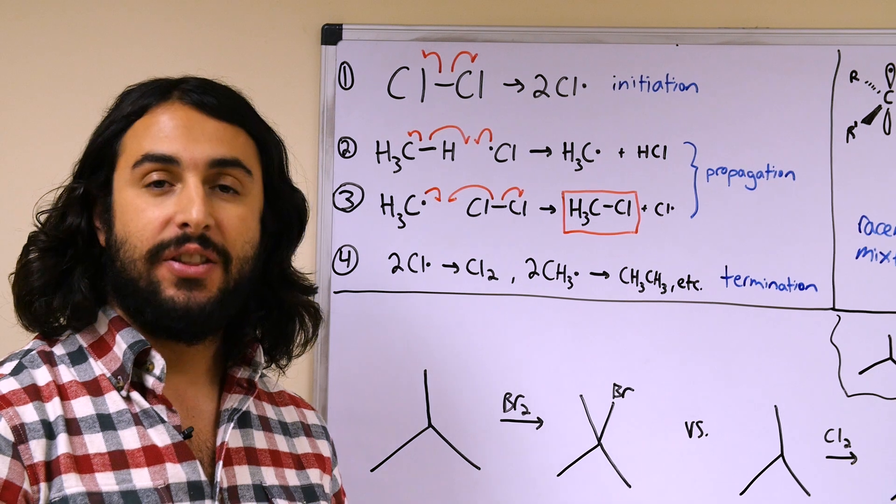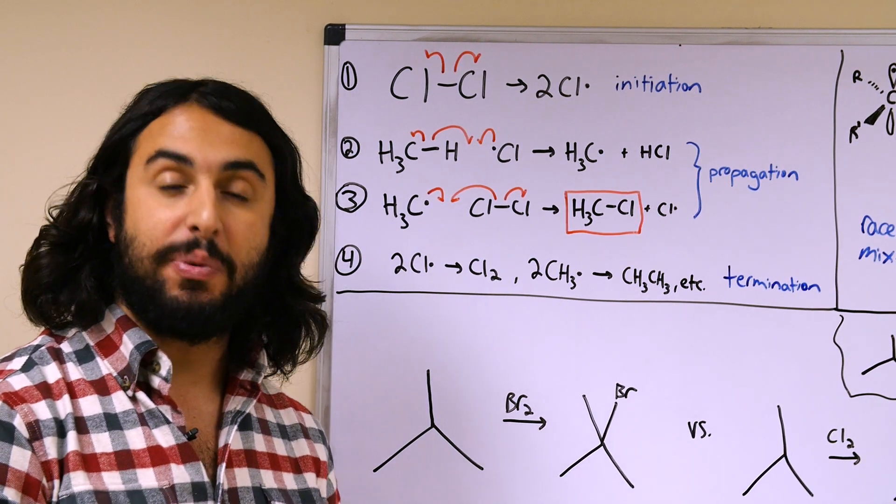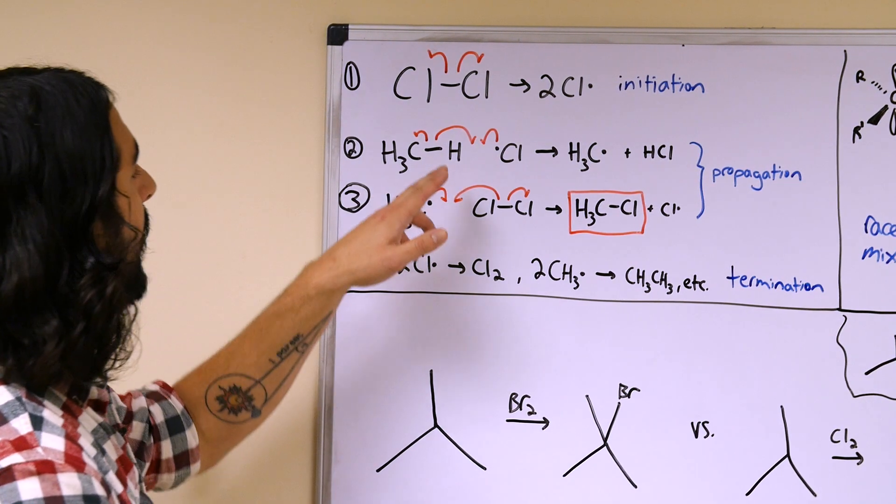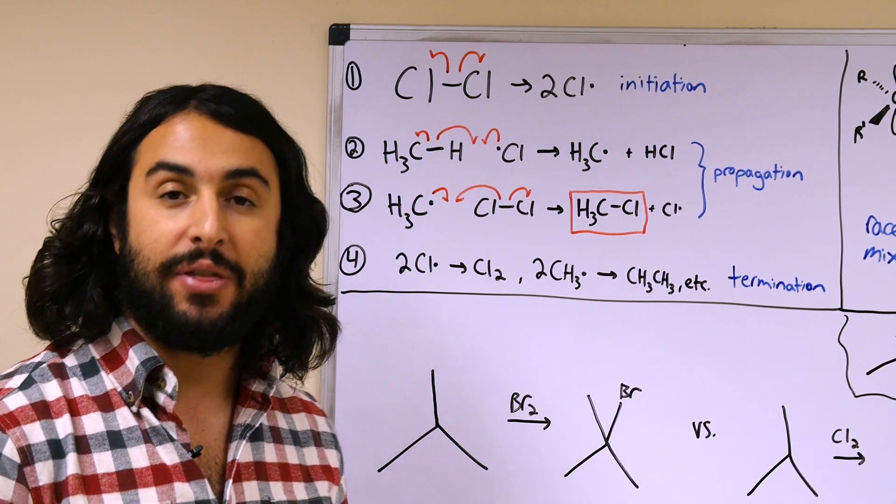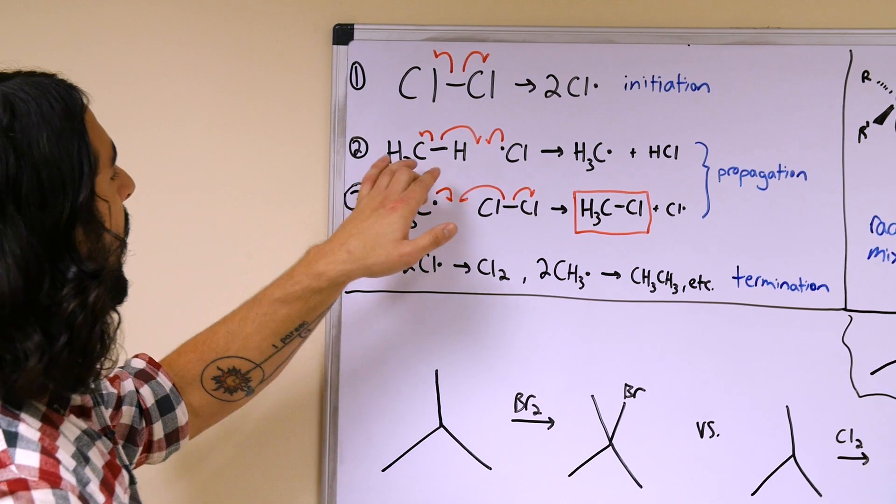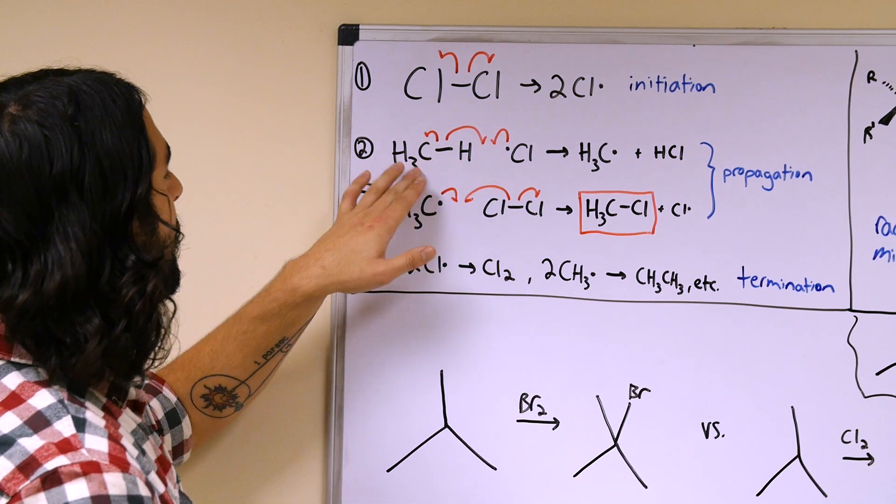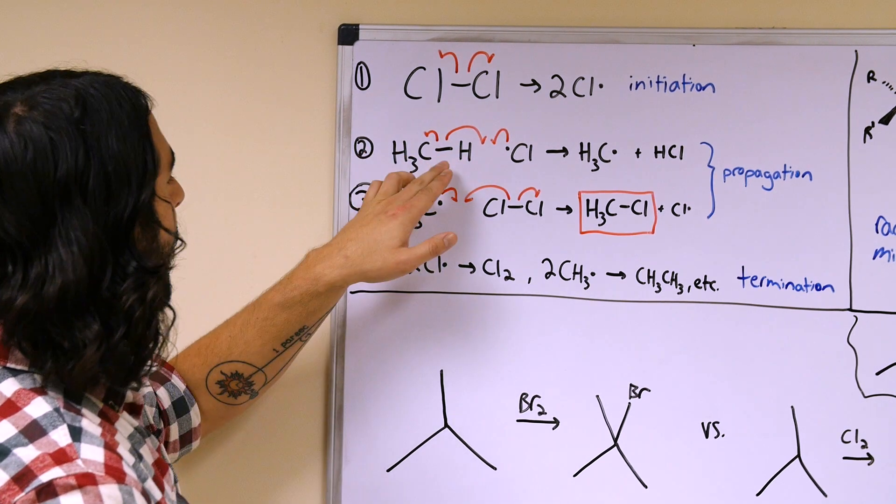What happens here is, let's say it finds a molecule of methane or some other hydrocarbon. It can propagate the existence of an alkyl radical by this process.